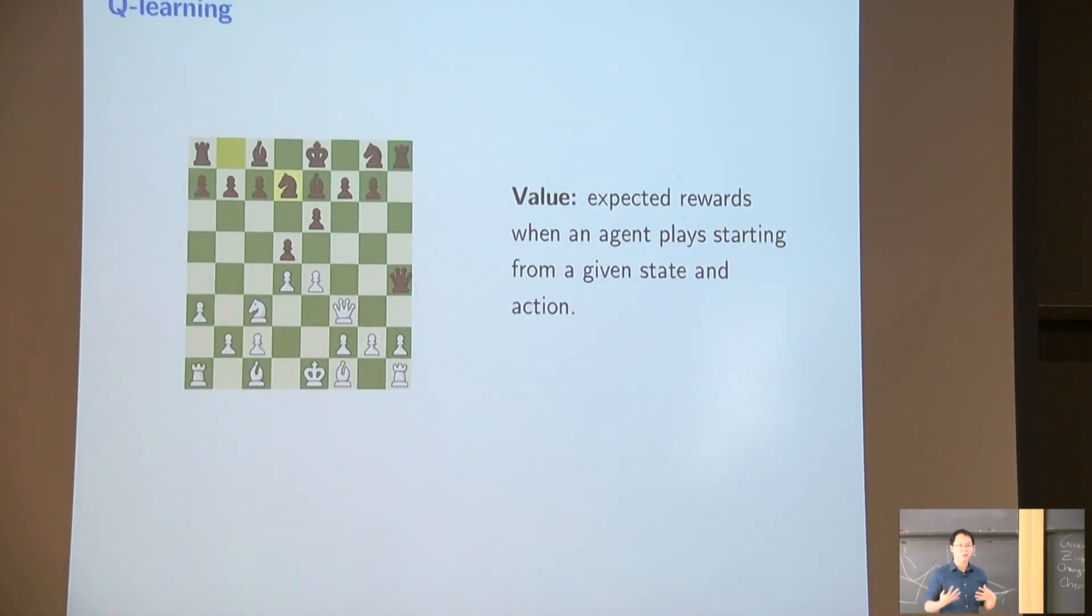In order to say more specifically what is Q-learning, we need to first know a very important concept called value. Essentially, value is expected reward when an agent plays start from a given state and action. For example, this is a state, which is the position. And you can start from any action. The value kind of reflects your belief and how valuable those current states are, like what is probability you're going to win these games.